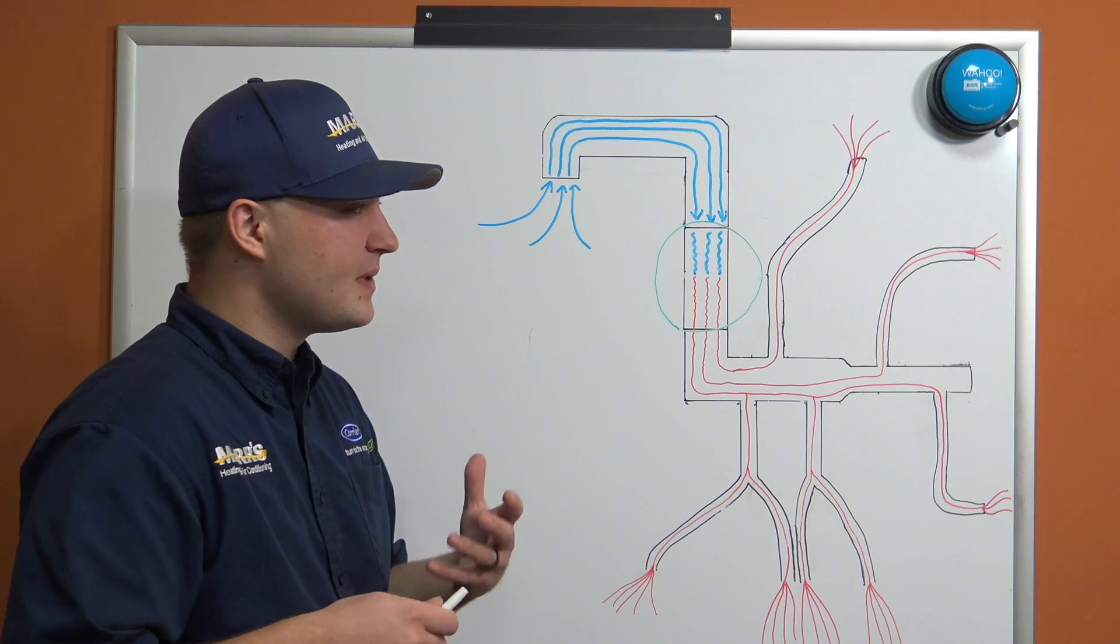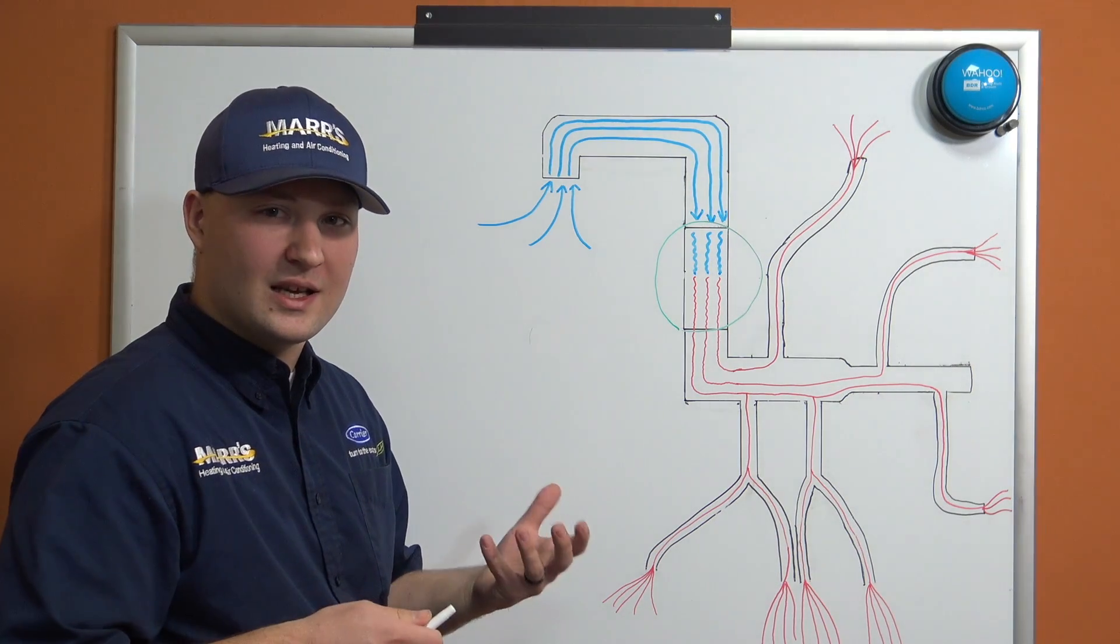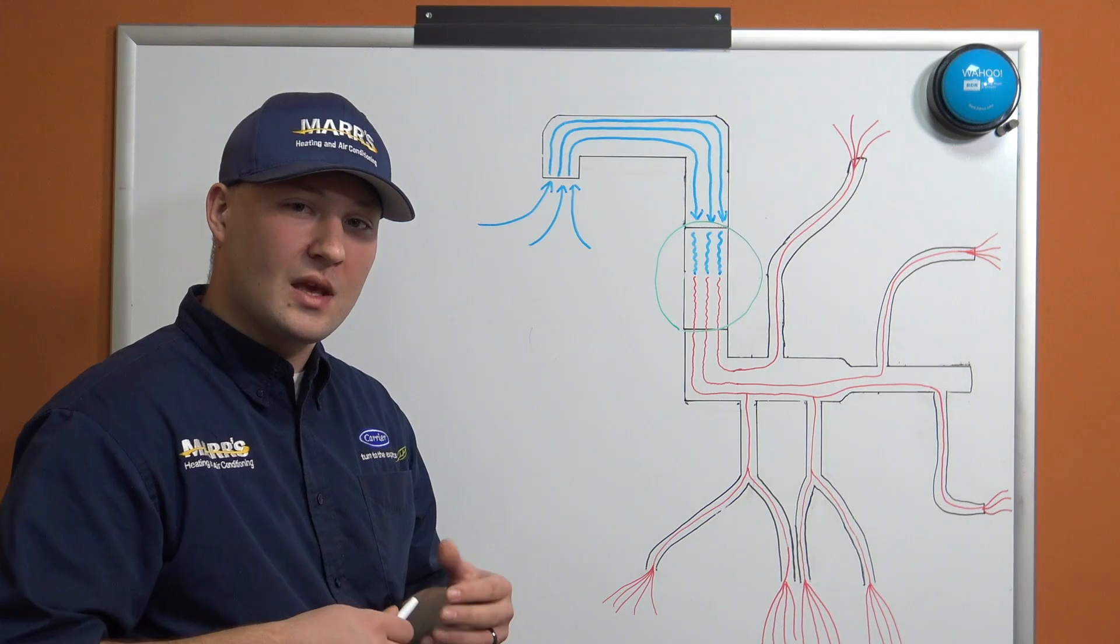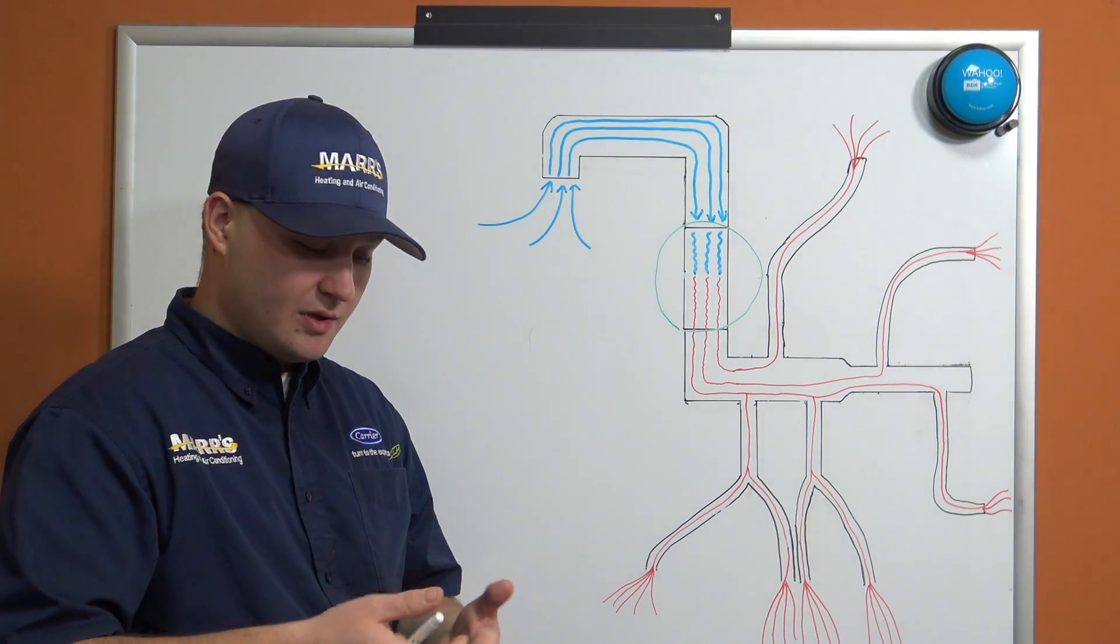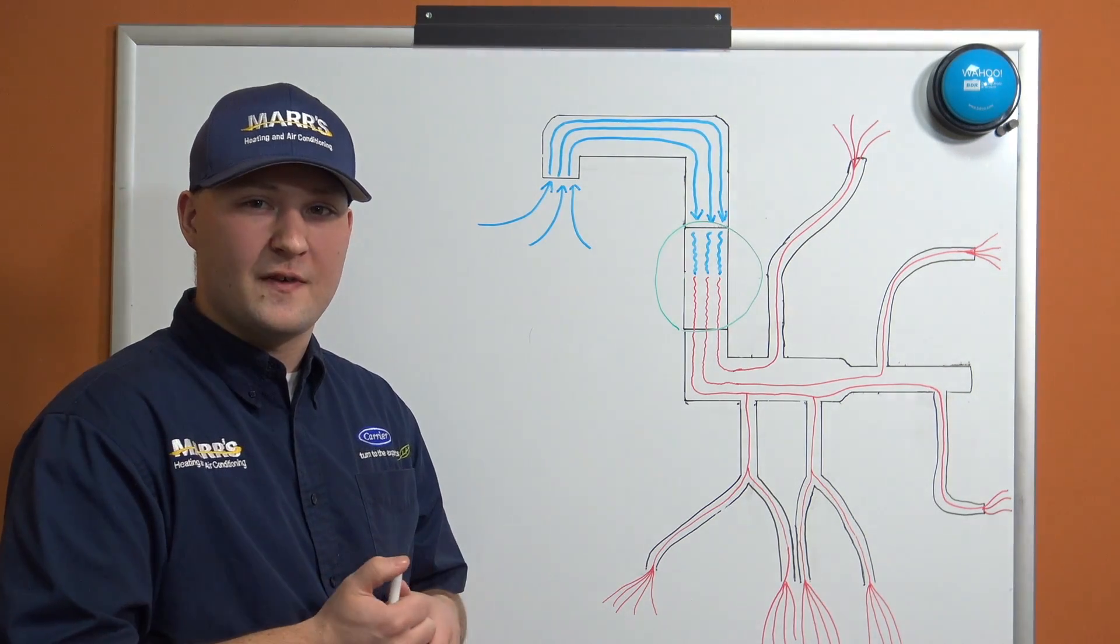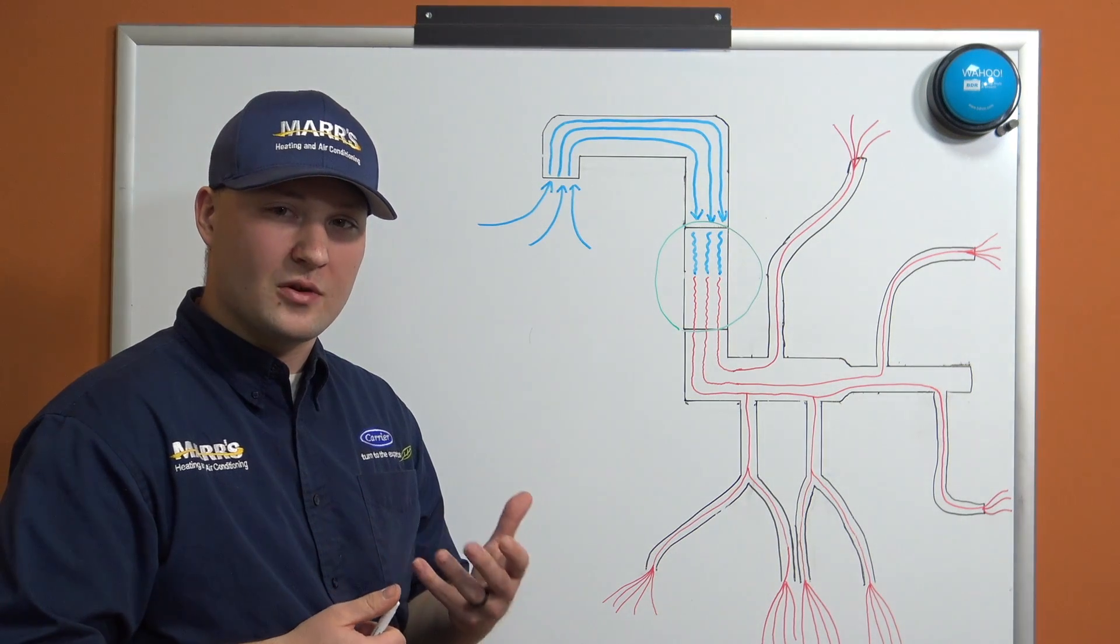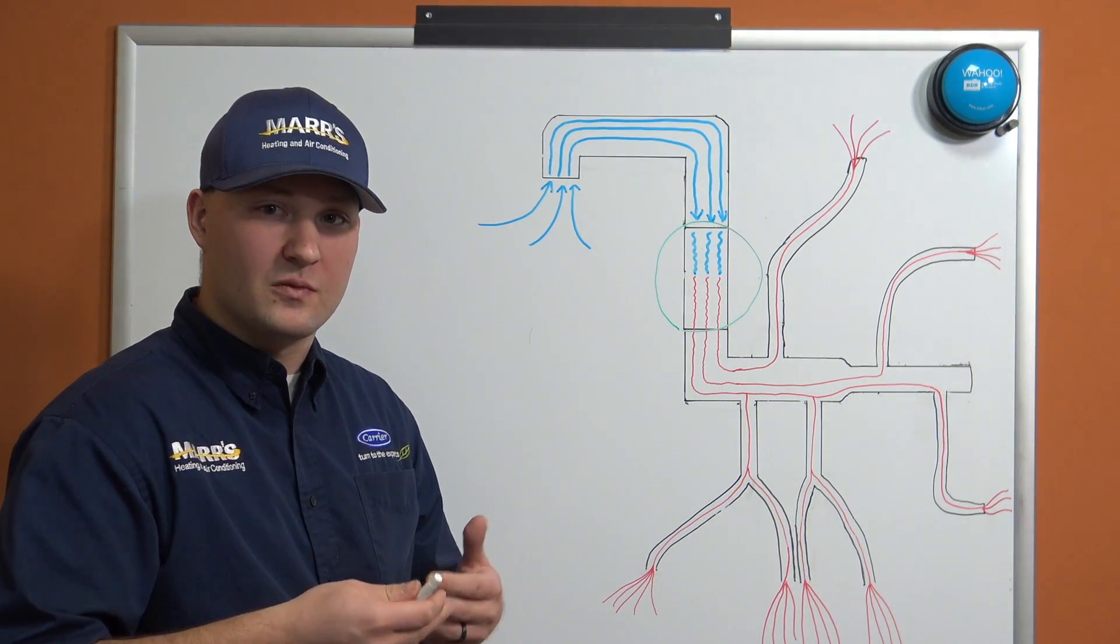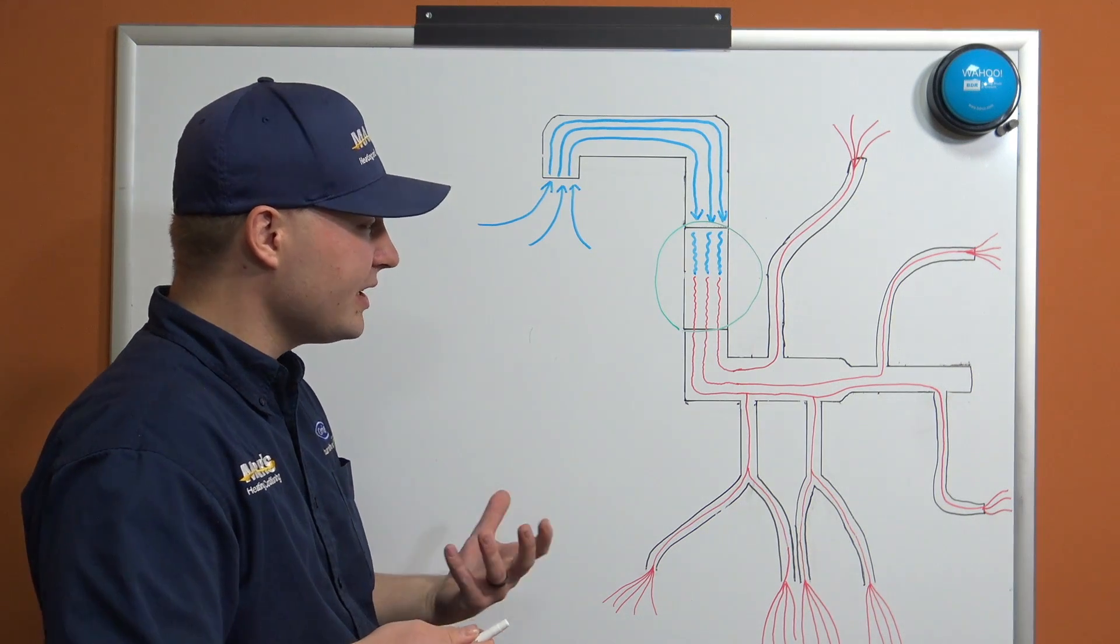We're going to correlate that to the charts that are provided by the manufacturer, and that'll tell us whether or not we're going to fall within the given range that we need to fall in. Things that can affect static pressure, just like blood pressure—if you think of our duct system as arteries, we don't want clogged arteries.